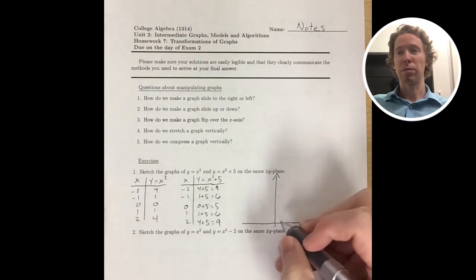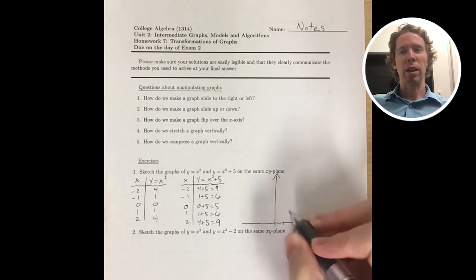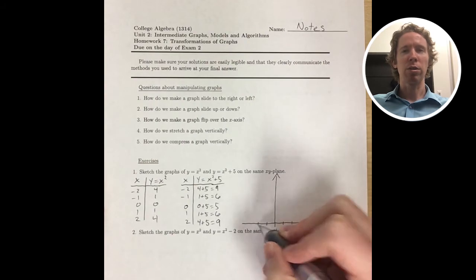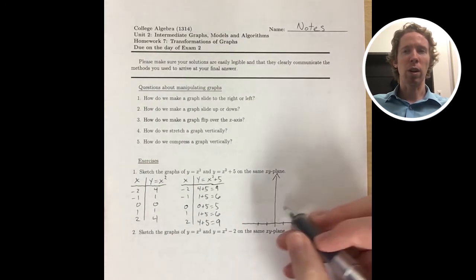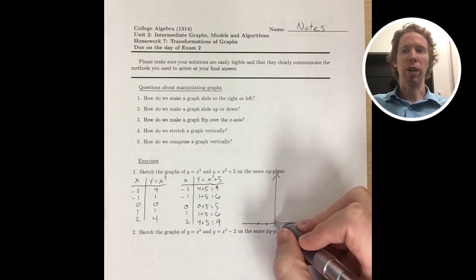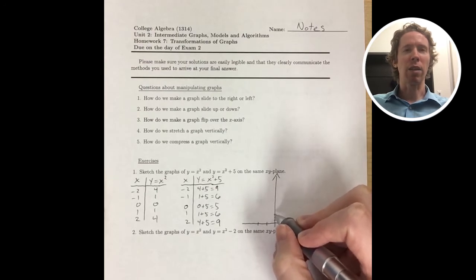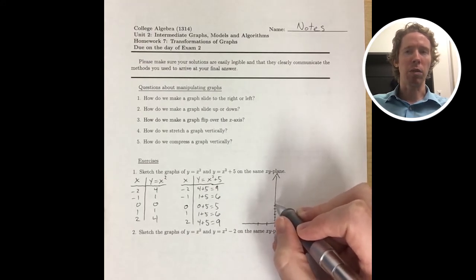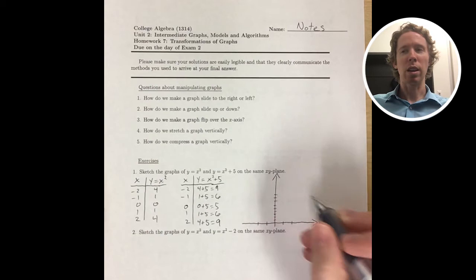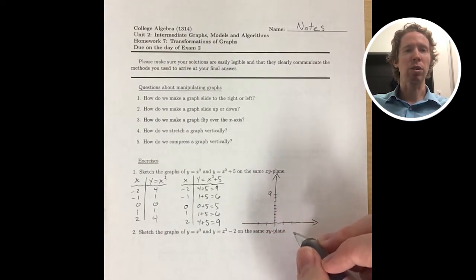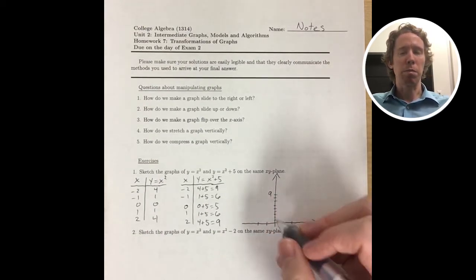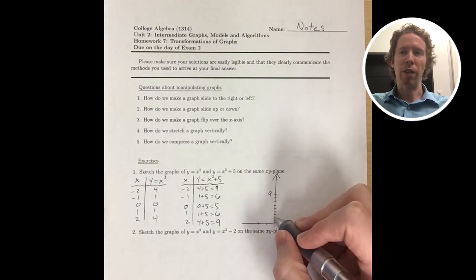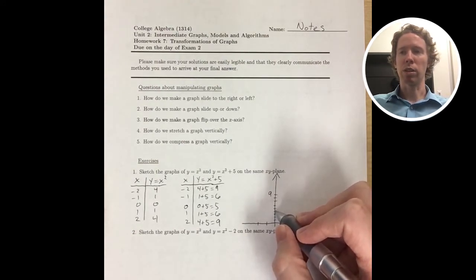But I have a guess. I know that if I keep the same x values, then when I go from y equals x squared to y equals x squared plus 5, I'm just adding 5 to every single y value that I had before. So I think that that should just take the curve that I had for the first graph and just push it up by 5 units. So let's see what happens.